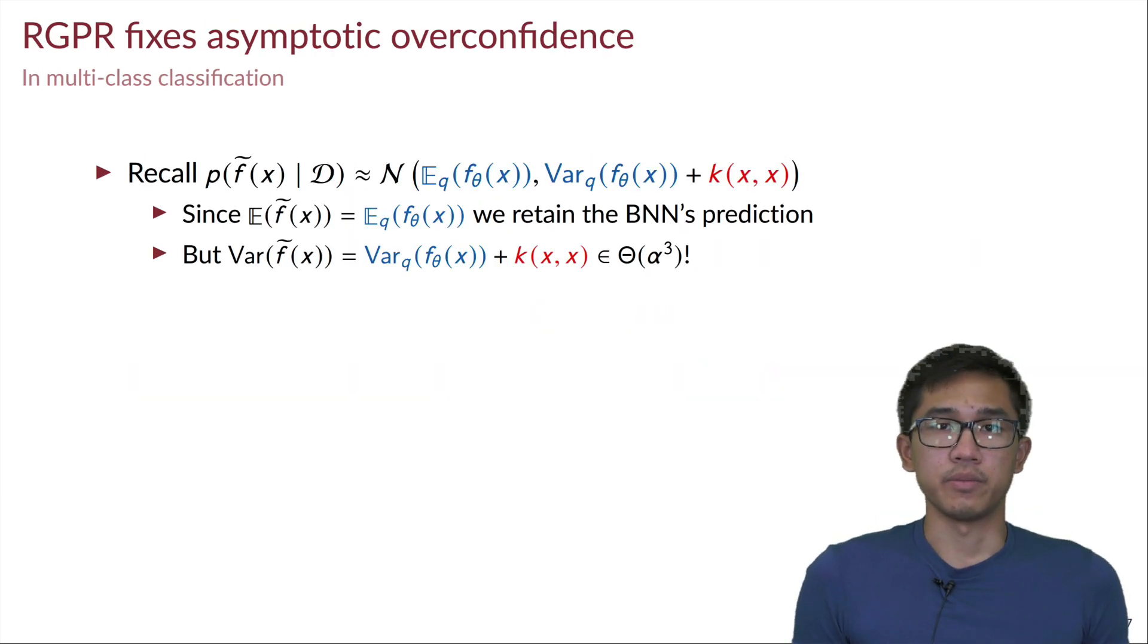RGPR is a very simple method, but it has very interesting properties. The first one being that it does not change the output of the Bayesian neural network in expectation.